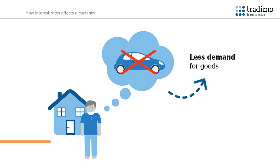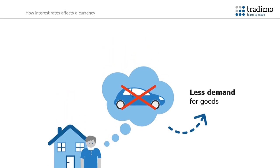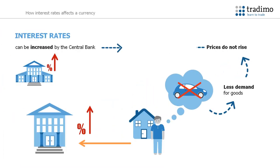Therefore, the demand for these goods, like cars, will go down. Manufacturers are now faced with a lower demand for their goods and are not able to raise the price that much. Therefore, raising interest rates will curb the economy by decreasing the demand for goods and services and will reduce inflation.